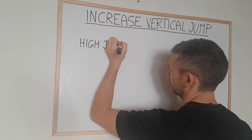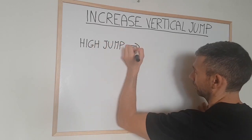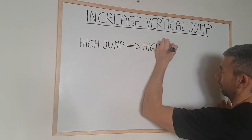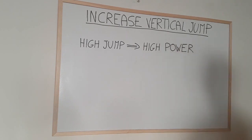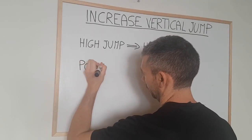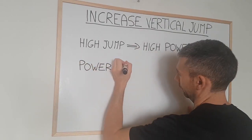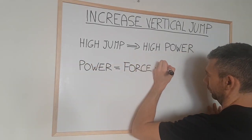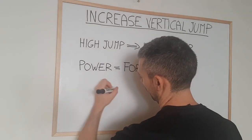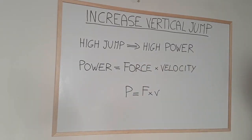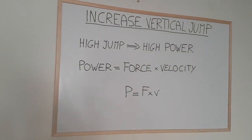First of all, to create height in the jump one must produce a lot of power. Power is determined by the amount of force you can produce in the shortest time possible. We can express this concept using the formula power equals force times velocity, or P = F × V, where force is the amount of work or energy that one is able to produce and velocity is the rate at which this force is produced.